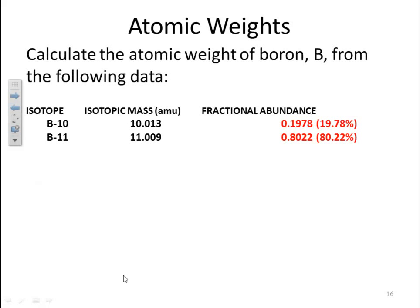Here's another example. Calculate the atomic weight of boron from the following data. We know there's two isotopes, boron-10 and boron-11, giving you the masses and the fractional abundances.